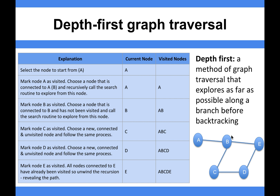A depth-first search uses stacks. Hopefully you've got a decent understanding of why — it's a LIFO, last-in-first-out, data structure. For example, if there was no connection to E from D, when I got to D I'd need to backtrack to the last visited node. So I'd go A, B, C, D — and from D I'd need to go back to C, from C back to B, and then from B I could go to E.